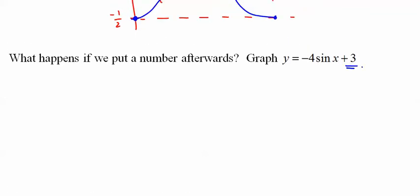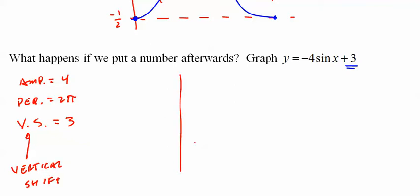So what if I put a three out at the end? Amplitude in this case is four. Period hasn't changed, 2π. It will change, I'll tell you when. Not yet. What the heck is VS? It's a vertical shift.